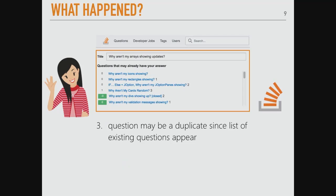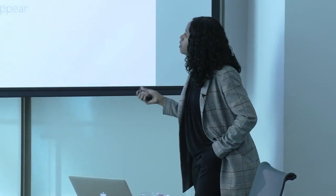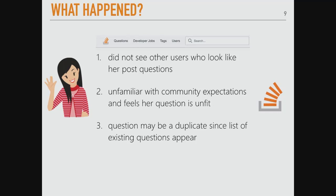Third, Asha may think her question is a duplicate. On Stack Overflow, when you type in the title of your question, you start to see other similar questions pop up. It may feel like you're adding clutter to a community that has such high utility. These are just examples of what may be plaguing Asha and other developers.